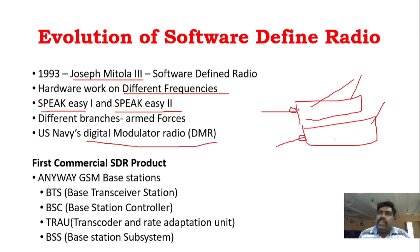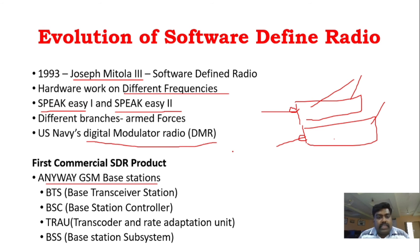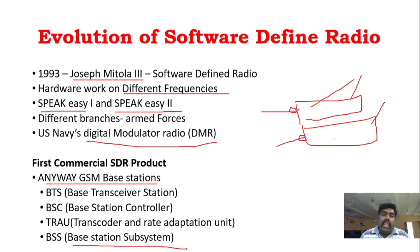This is the evolution of software defined radio. The first commercial SDR product is the Anyway GSM Base Station. Its main components include the BTS — Base Transceiver Station, BSC — Base Station Controller, Transcoder and Rate Adoption Unit, and the Base Station Subsystem, all integrated together.